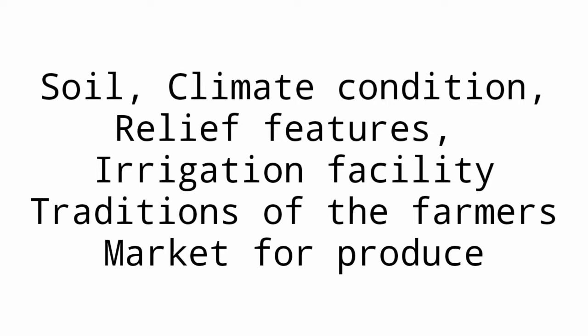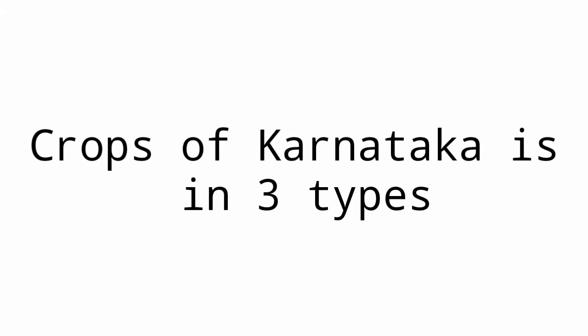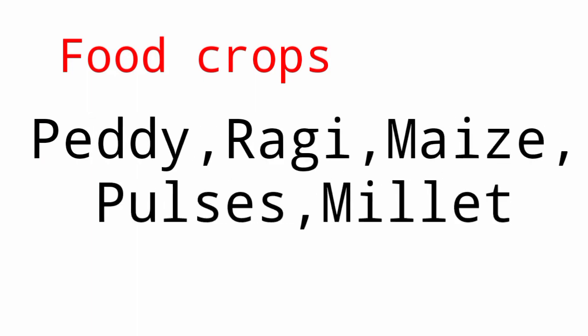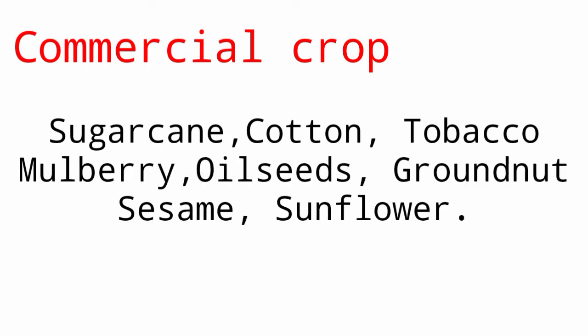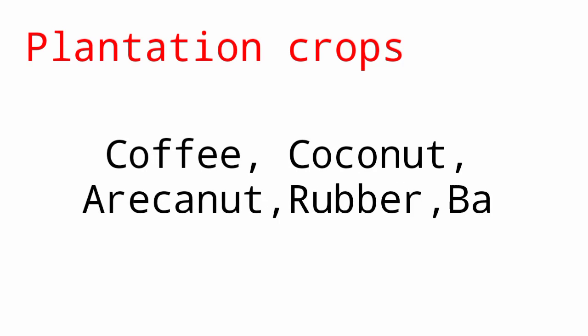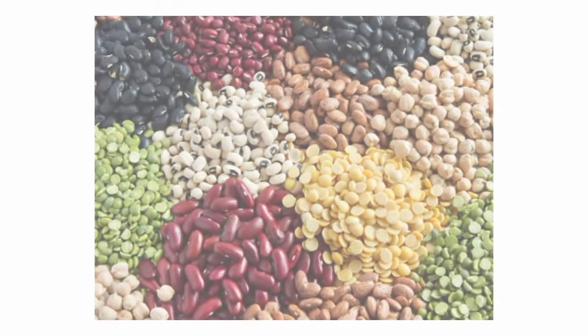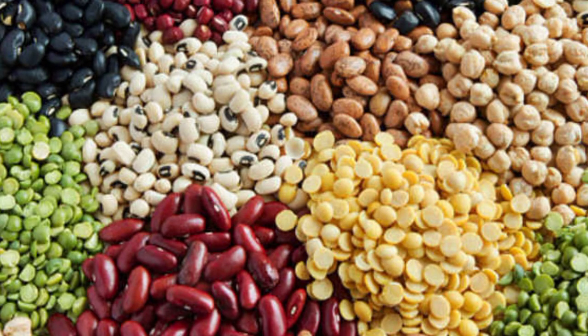The crops of Karnataka have been classified into three types. The first type is food crops, which include paddy, ragi, maize, pulses, and millet. The second type is commercial crops, which include sugarcane, cotton, tobacco, mulberry, oilseeds, groundnut, sesame, and sunflower. The third type is plantation crops, which include coffee, coconut, areca nut, rubber, and banana. These are all the types of crops in Karnataka.